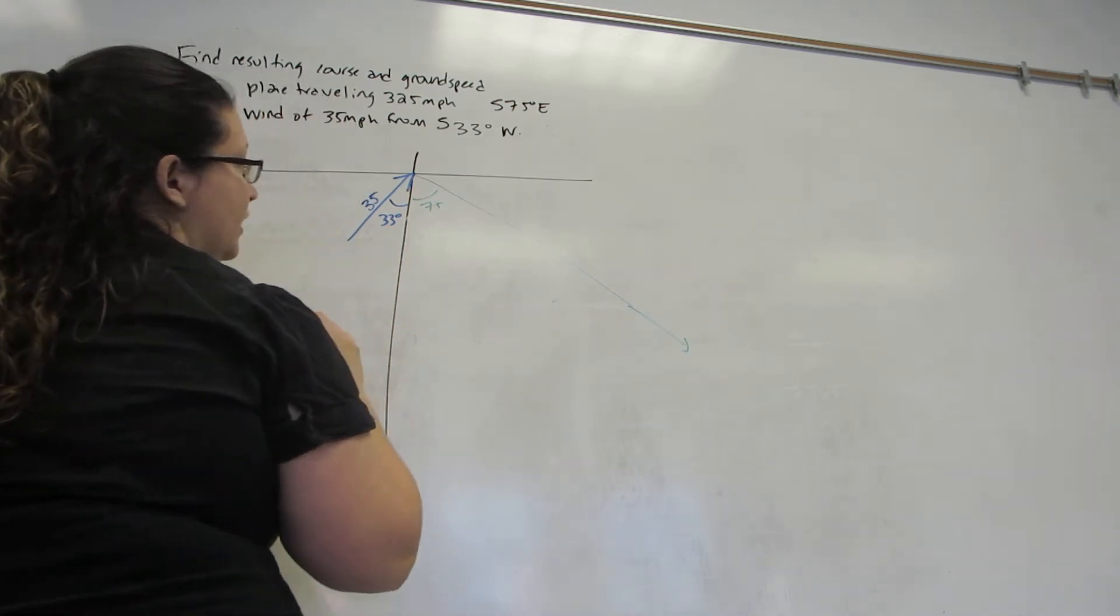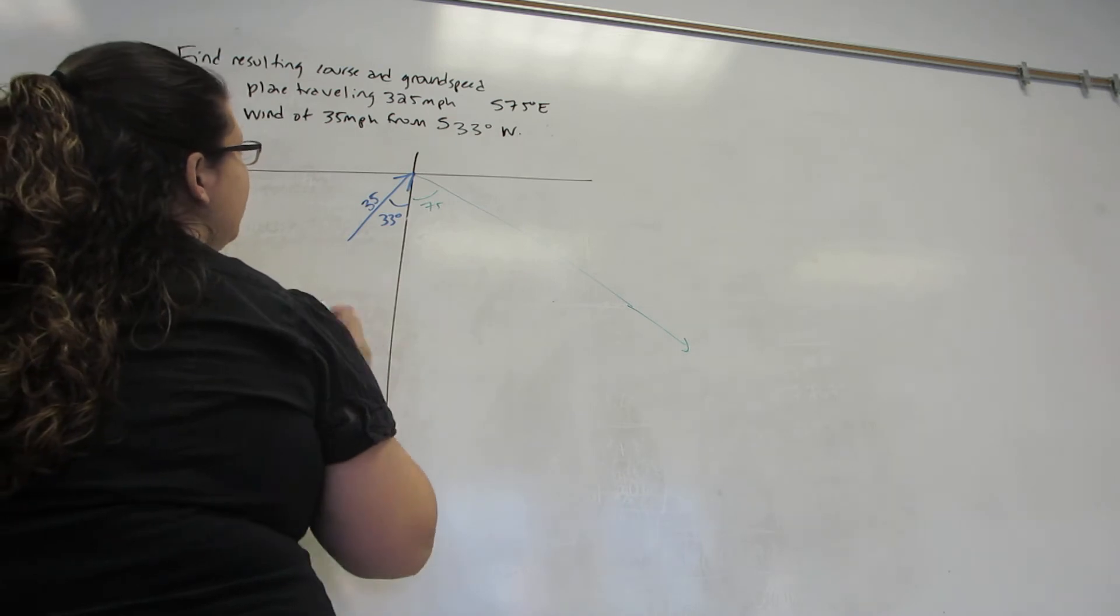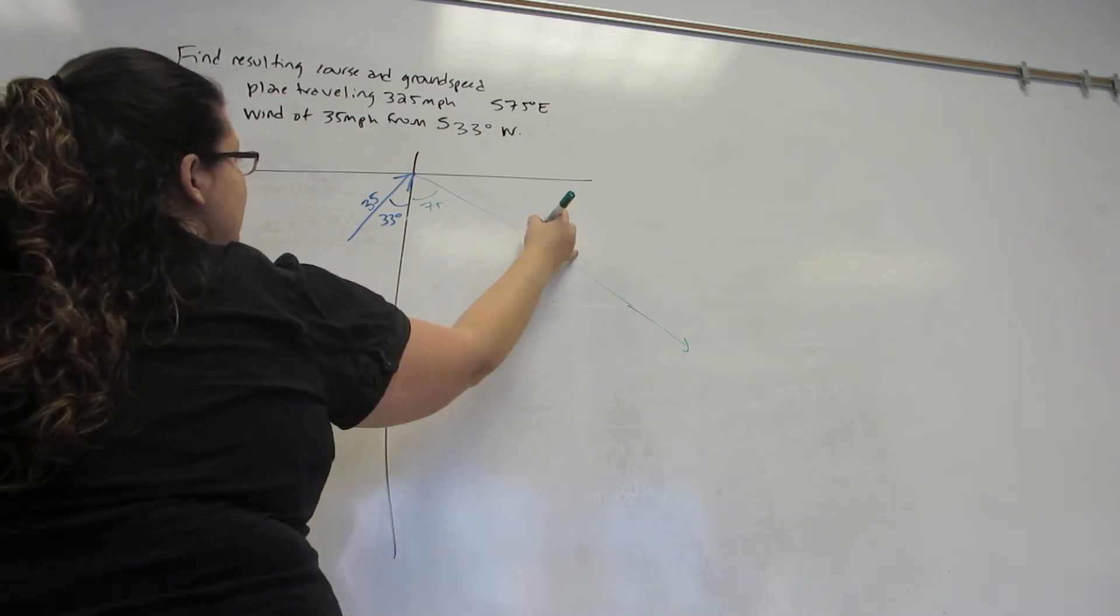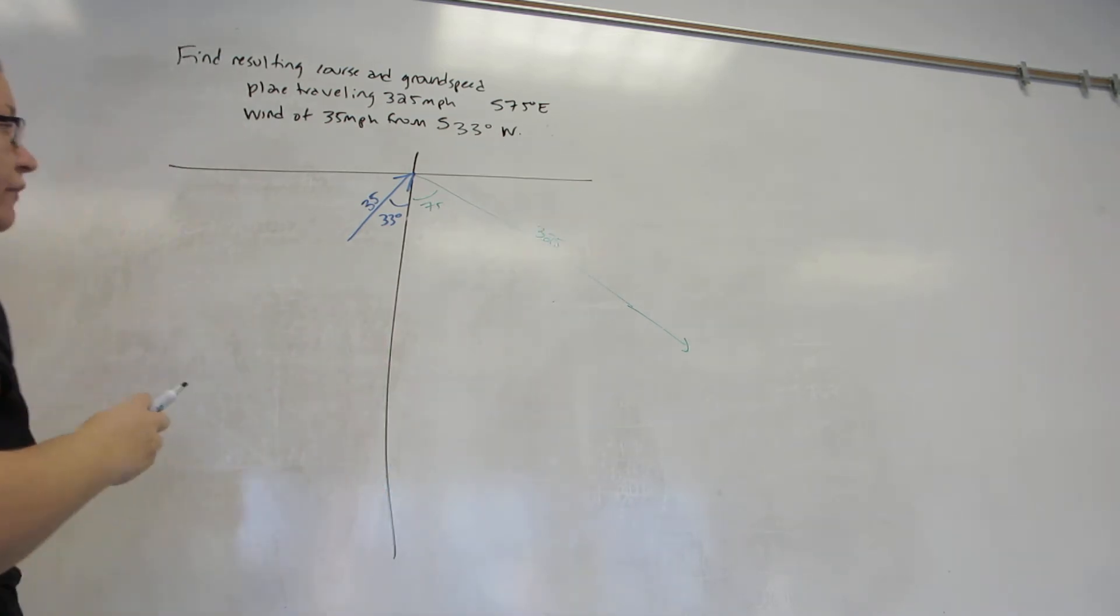It's traveling in that direction, so the arrow is pointing away from the origin, and the length of this is the 325 miles per hour.